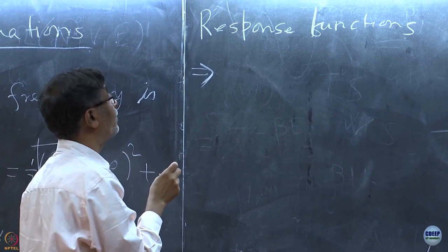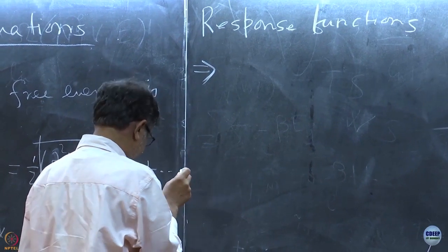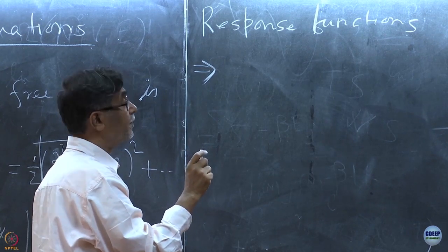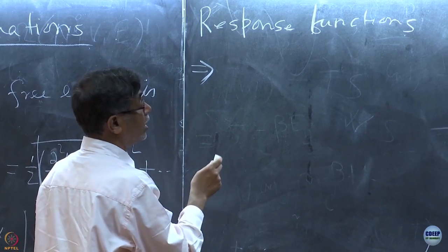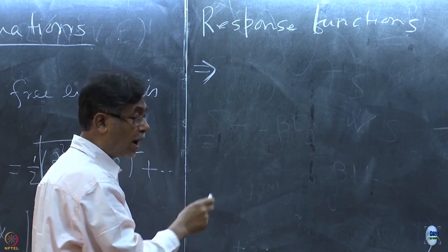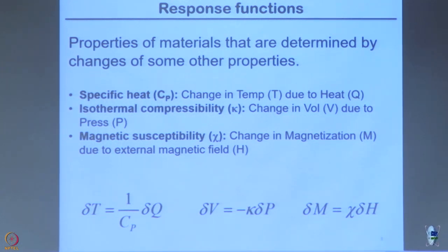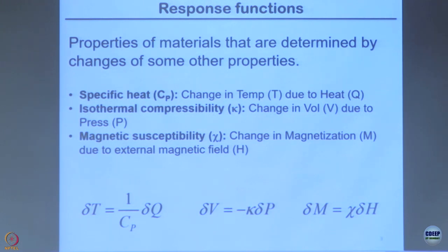These response functions are the most important properties of a system. Like when we brought the rock from the moon, other than the density, the first thing they calculate is the specific heat. Whenever you go to museums, they will write down the specific heat and the conductivity. Those properties — conductivity, specific heat — are the response functions. Because if I want to change temperature by delta T, then I have to give an amount of heat delta Q, and delta Q by delta T is the Cp. Specific heat is the amount of heat needed to change the temperature by one degree — that's what you have learned since 8th grade.